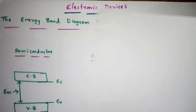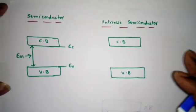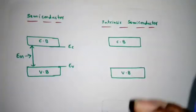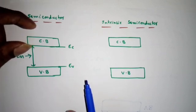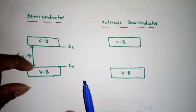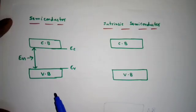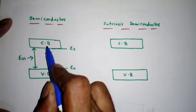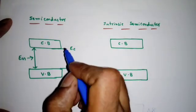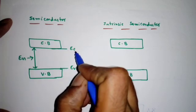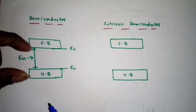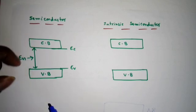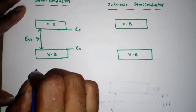When drawing the energy band diagram of any material, we have two bands: the top band is called the conduction band and the lower band is called the valence band. The valence band is completely filled with electrons and the conduction band is empty. The bottom of the conduction band is called Ec and the top of the valence band is called Ev.